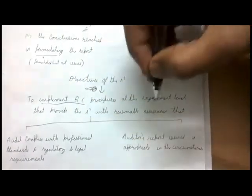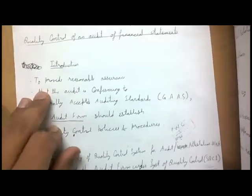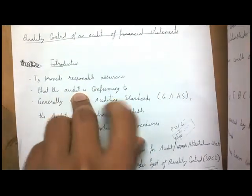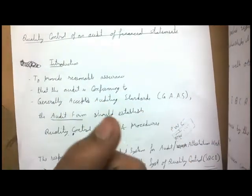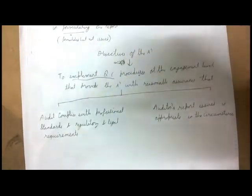The objectives of the auditor are divided into two parts. First, to implement quality control procedures at the engagement level that provide the auditor with reasonable assurance. The objective is to ensure that the audit complies with professional standards and regulatory and legal requirements — in other words, to provide reasonable assurance that the audit conforms to auditing standards.